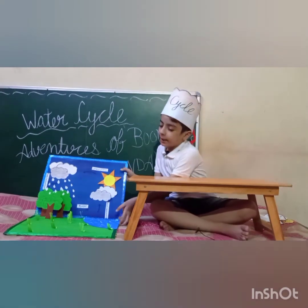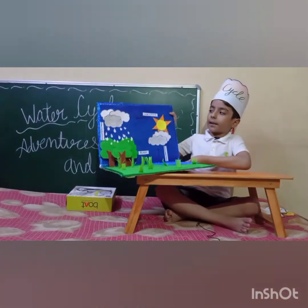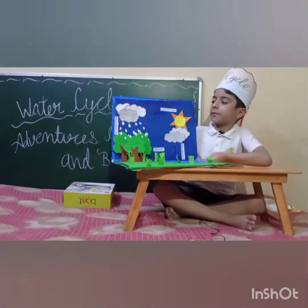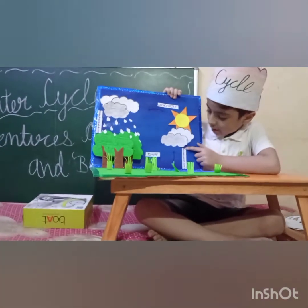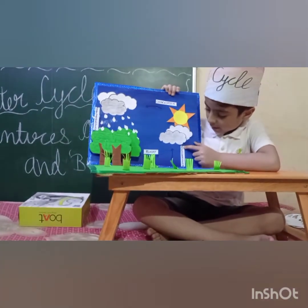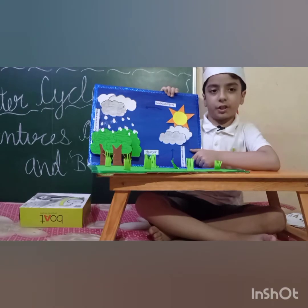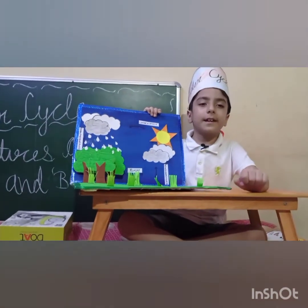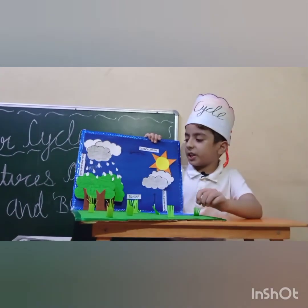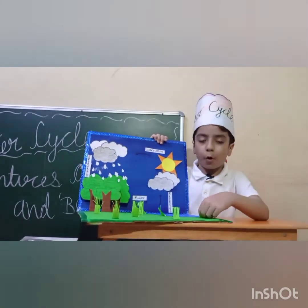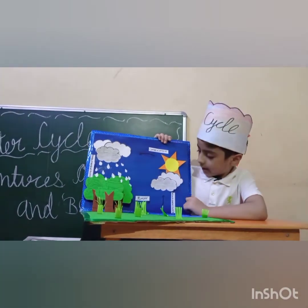The main thing we were trying to discuss is how does the water cycle work. The first step of the water cycle is evaporation. Evaporation means the water drops change into water vapor and then fly towards the sky.